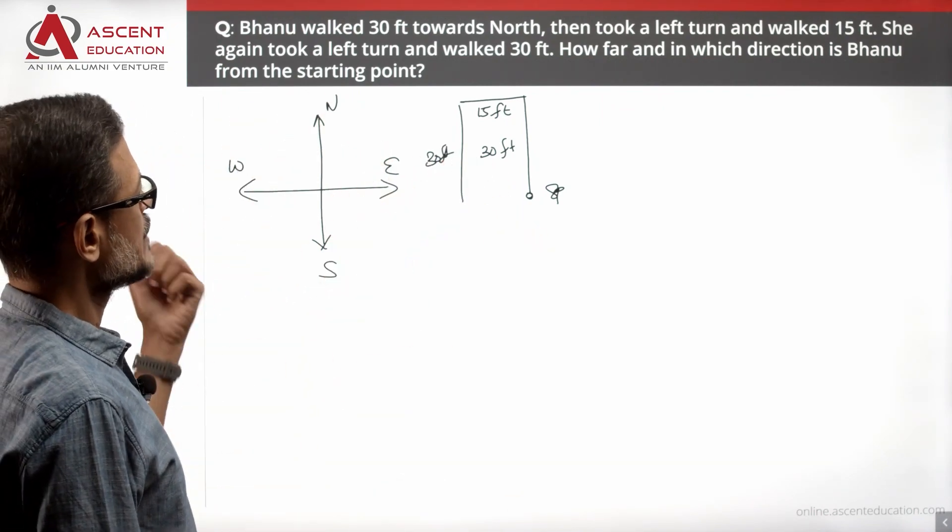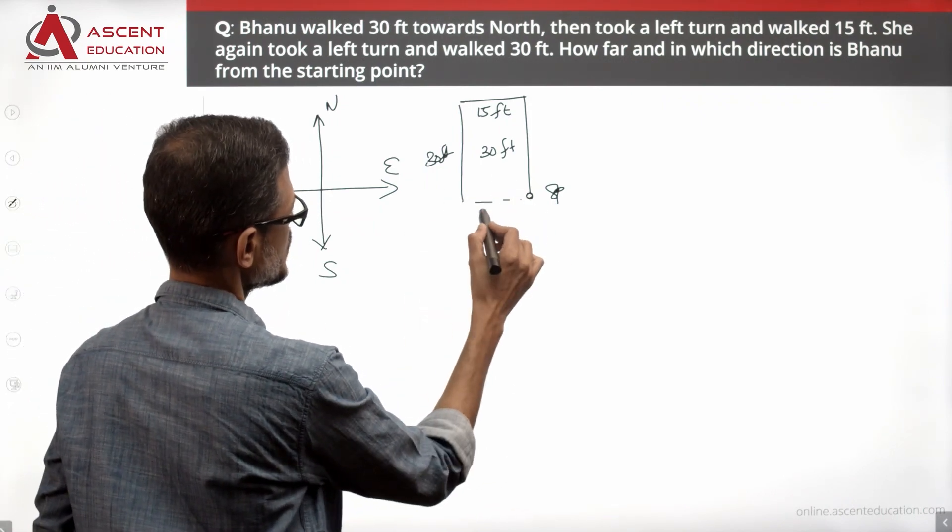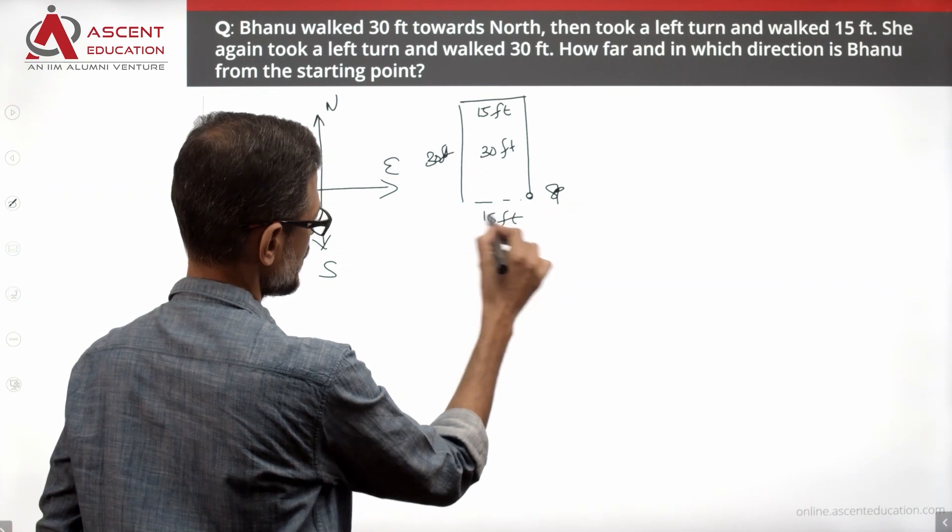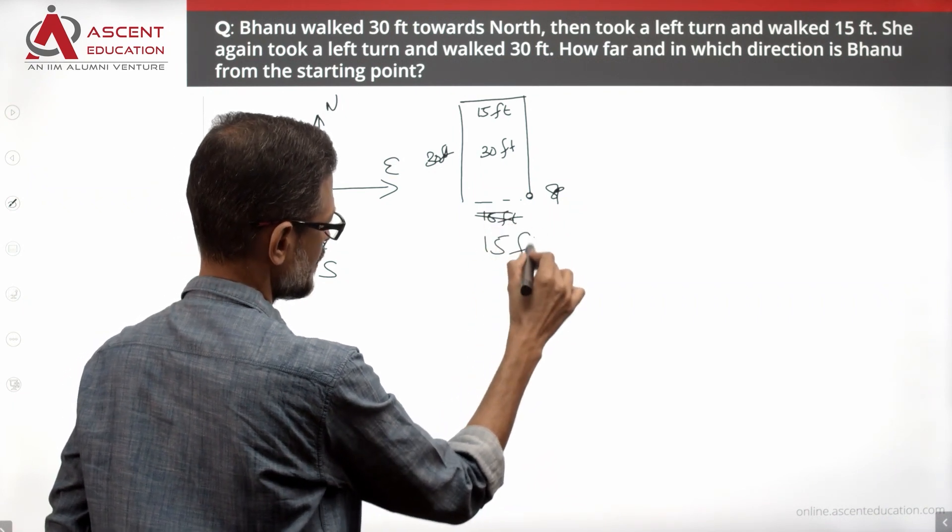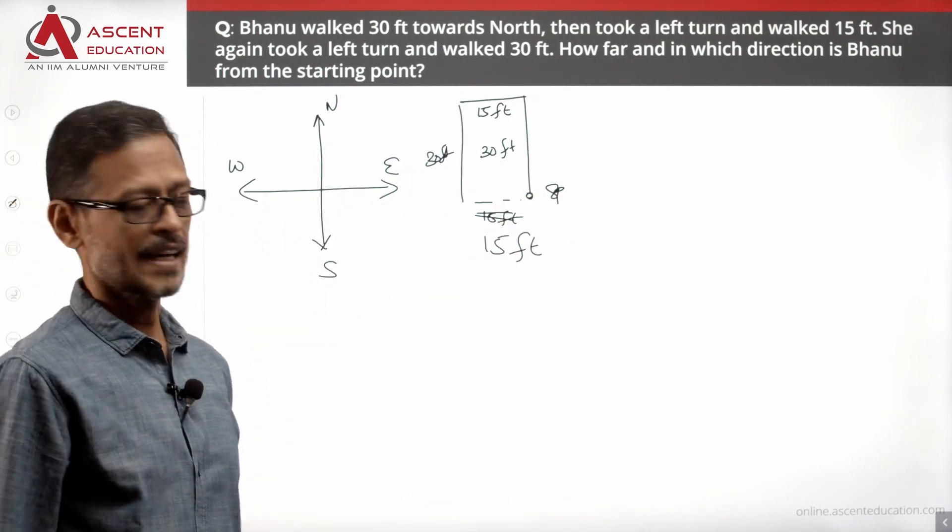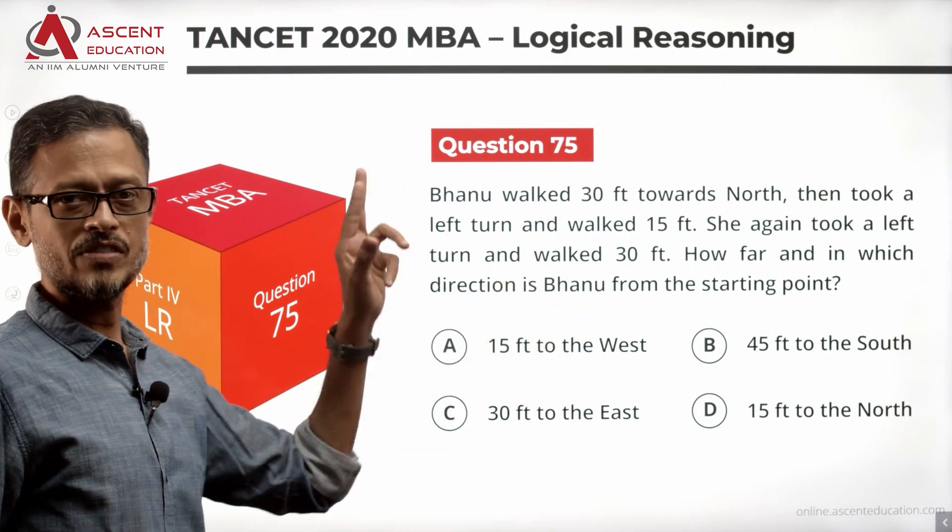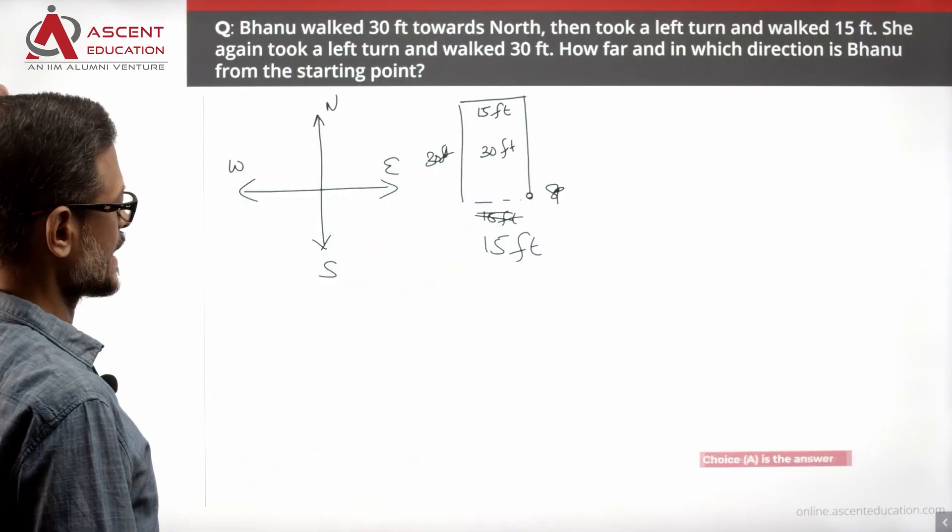How far and in which direction is Banu from the starting point? This is the starting point. She is 15 feet away from the starting point in the westward direction. 15 feet to the west from the starting point. Choice A is the correct answer to this question.